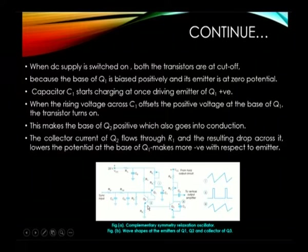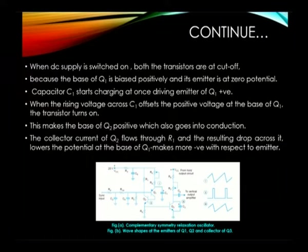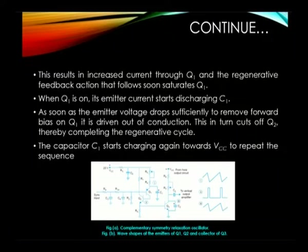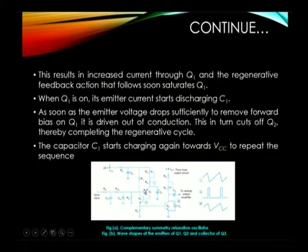The collector current of Q2 flows through R1, and the resulting voltage drop across R1 lowers the base potential of Q1, making it more negative with respect to the emitter. When Q1 and Q2 are conducting, driven by the peak voltage from C1, there is a drop in R1. This results in increased current through Q1. Due to regenerative feedback action, Q1 reaches saturation. When Q1 is on, its emitter current starts discharging C1, and the discharging of C1 soon starts.